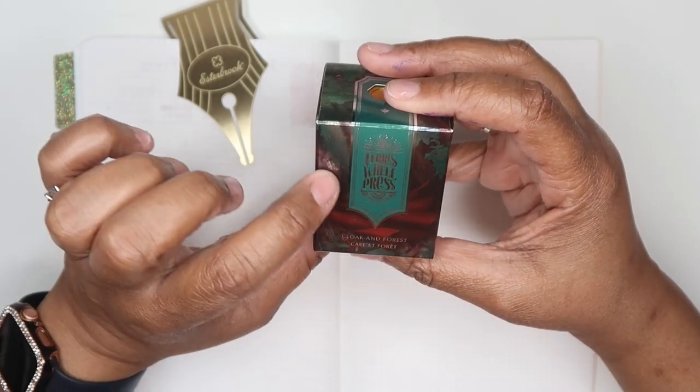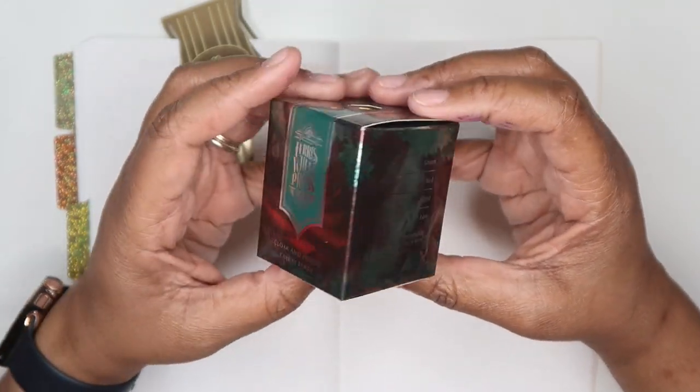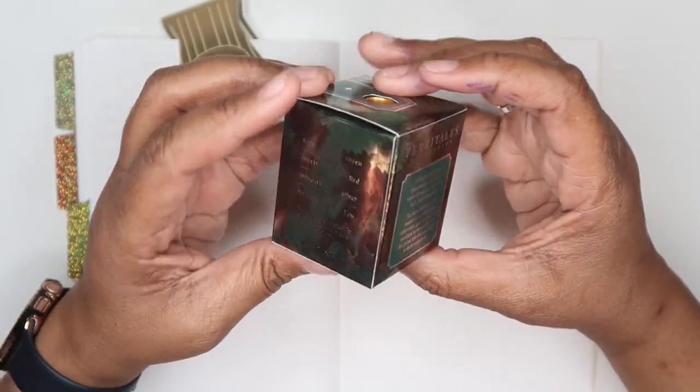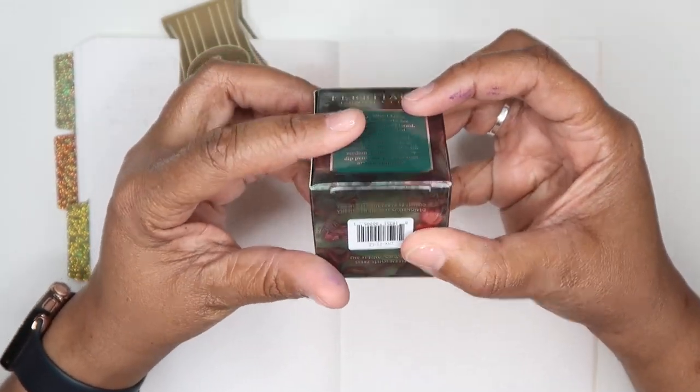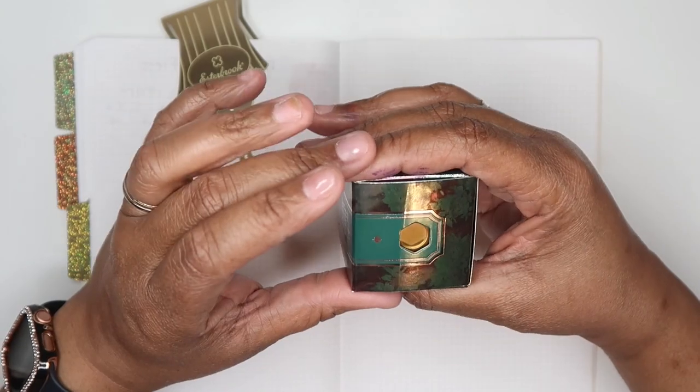So this would be like the red cloak. This would be the deep of the forest where little red riding hood is running away from the big bad wolf. I'm excited to swatch this one. So let's go ahead and get it out of the box.